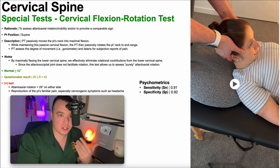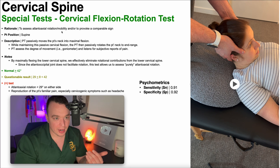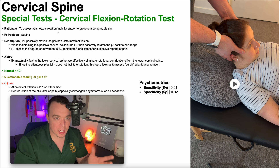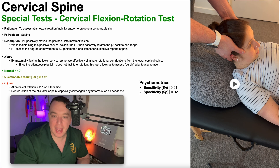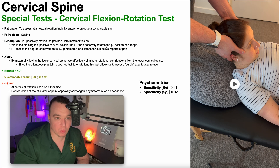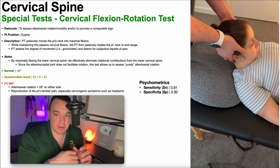So that's why this is a good test to assess for atlanoaxial rotation, and again the other things we mentioned at the start of the video. Make sure you understand Freyette's Third Law and why this is looking at atlanoaxial rotation. While maintaining this passive cervical flexion, the PT then passively rotates the patient's neck to end range — sorry for the misspelling there.